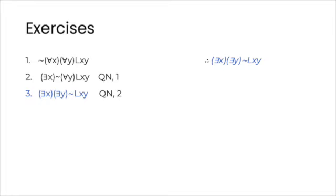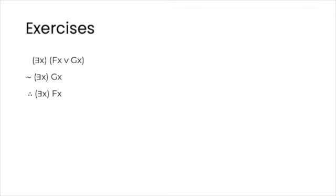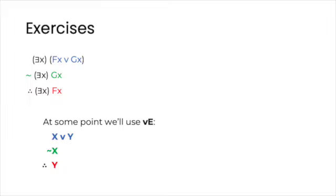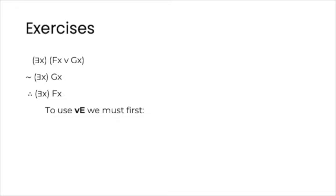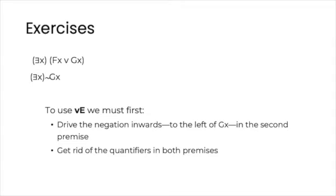Now let's look at this next example. We have these two premises: there is an x that is F or G, and not there is an x that is G. The conclusion is: there is an x that is Fx. You can see that at some point we're going to use the disjunction elimination rule — the colors are here to help you see the correspondences. In order to do that, we're going to have to do two things: first, get rid of the quantifiers in both premises; second, in line two, drive the negation inwards so that it directly applies to the sentence within the quantifier's scope.